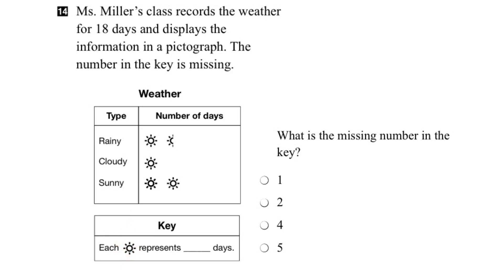Let's start by looking at the symbols. For sunny days, two symbols were used. For cloudy days, just the one symbol. And for rainy days, there was one and a half symbols used. So the total number of symbols is four and a half.